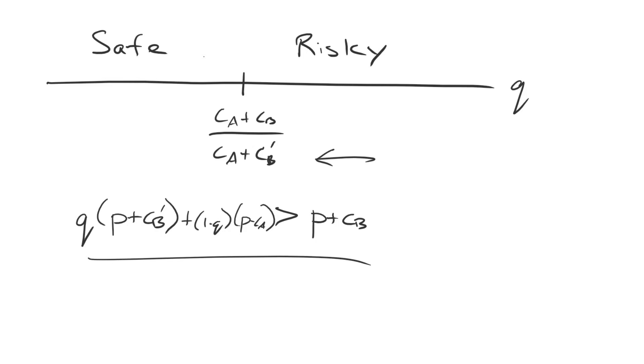If we solve for this, we get Q as being greater than CA plus CB over CA plus CB prime. The key thing, again, though, we're talking about the distribution of power and how that changes the probability of war. All of these P's cancel out in this. So as a consequence of that, our cut point is no longer a function of P. And that's the second reason why people out there think that the probability of war is not a function of P.